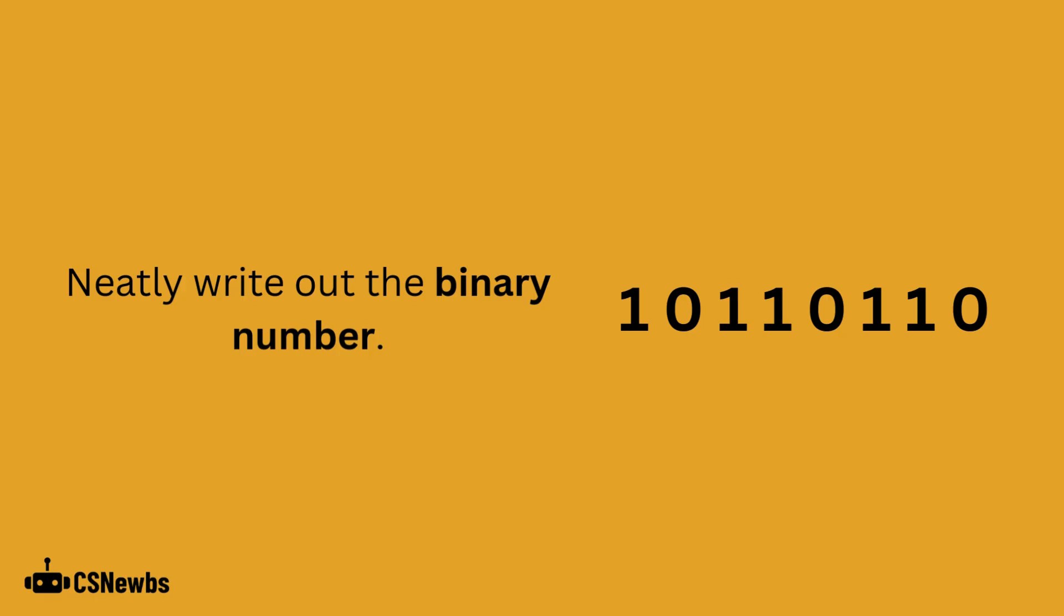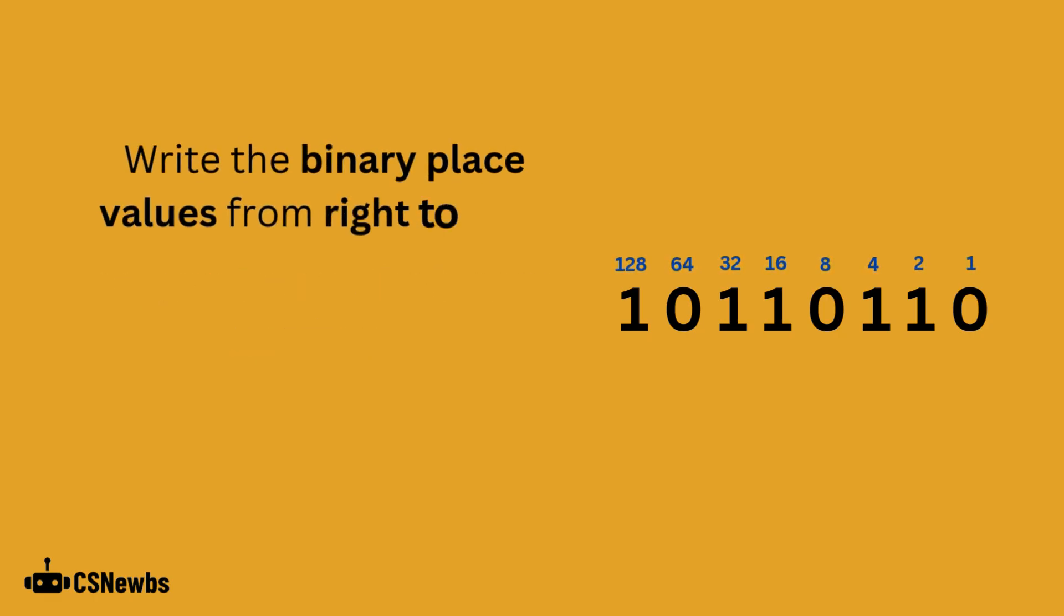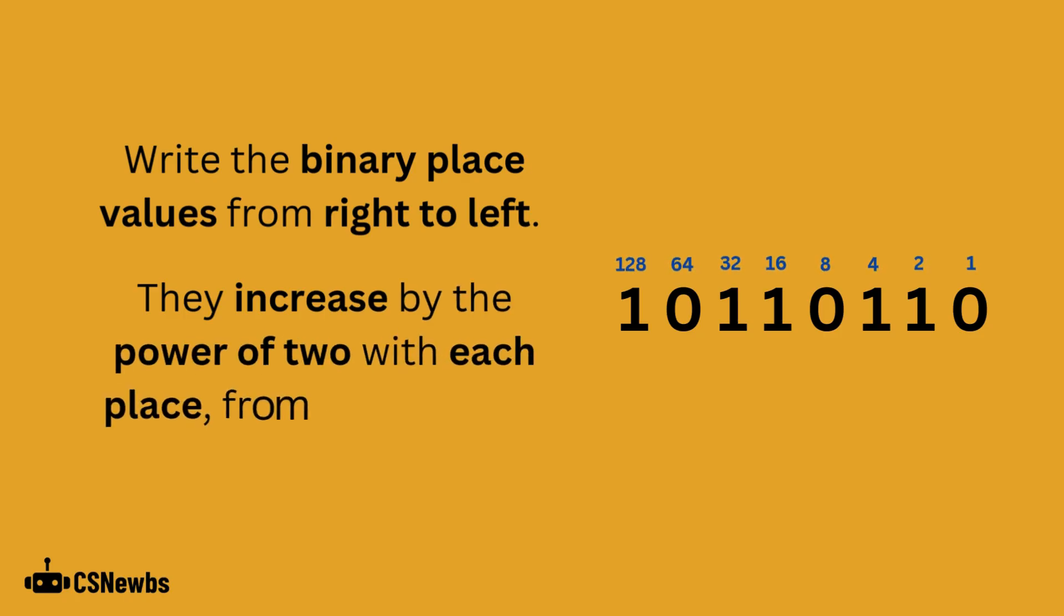Neatly write out the binary number. Write the binary place values from right to left. They increase by the power of 2 with each place, from 1 up to 128 with an 8-bit number, doubling each time.